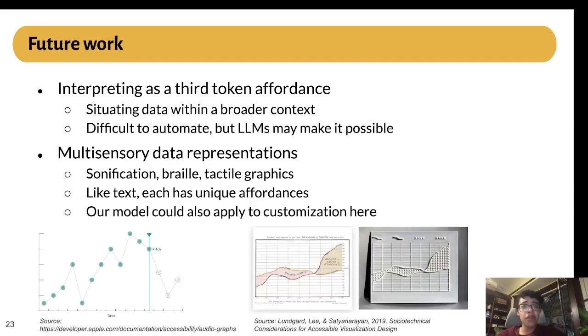Beyond our evaluation, we identified a couple of areas of future work worth pursuing. In this work, we identified two affordances for tokens, wayfinding and consuming. We also theorized the existence of a third affordance, interpreting. Tokens with this affordance would let users take the data they had consumed and situate it within a broader context. For example, an interpreting token in our stock prices example could mention that the dip in prices during 2008 was linked to the US recession. We weren't able to include this affordance in our work because the level of context that it requires makes it very difficult to generate automatically. However, the recent increase in large language models capabilities have made generating tokens like this seem more possible, so we hope to explore it further.